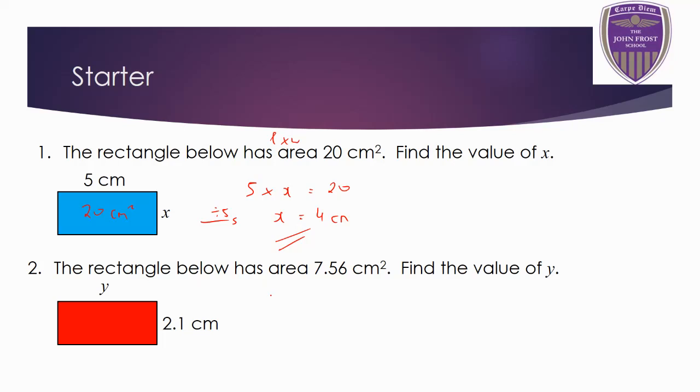And this one, same sort of thing, this time length times width equals 7.56. If you divide by 2.1, then you get y equals 3.6 cm. So to find a rectangle's area, if you know a rectangle's area and one dimension, to find the other dimension, divide the area by the dimension. Pretty basic, okay?